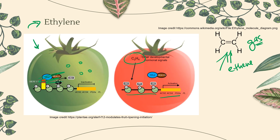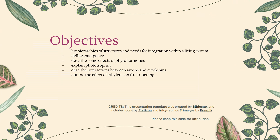We have accomplished all of our objectives. We talked about hierarchies of structures — cells, tissues, organs, organ systems, and organisms — and the need for integrating all of those systems. We talked about emergence: the complex organism has properties that do not exist in lower levels of structure. We talked about phytohormones and how they can lead to phototropism, thigmotropism, and all kinds of other tropisms. We discussed interactions between auxins and cytokinins, and wrapped up with a look at ethylene. Great work today!